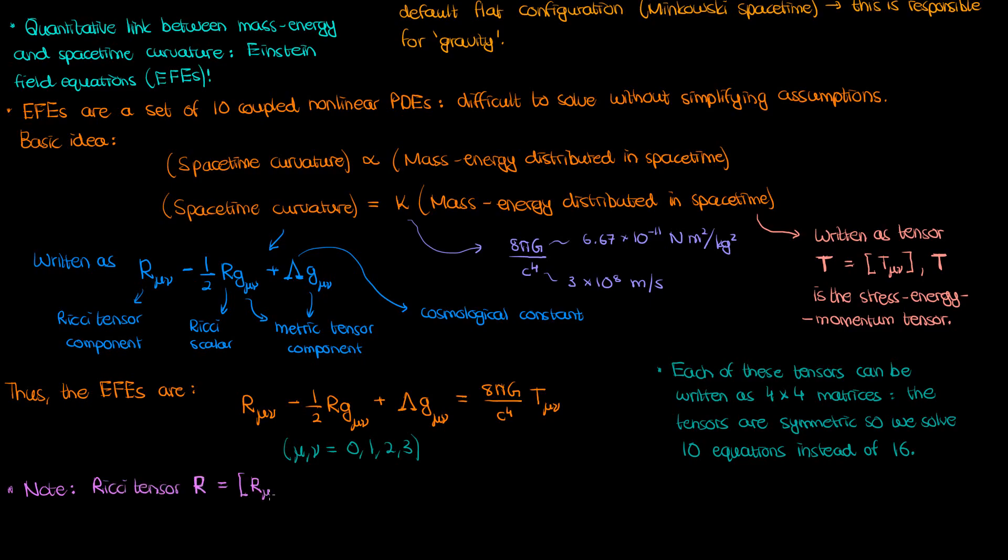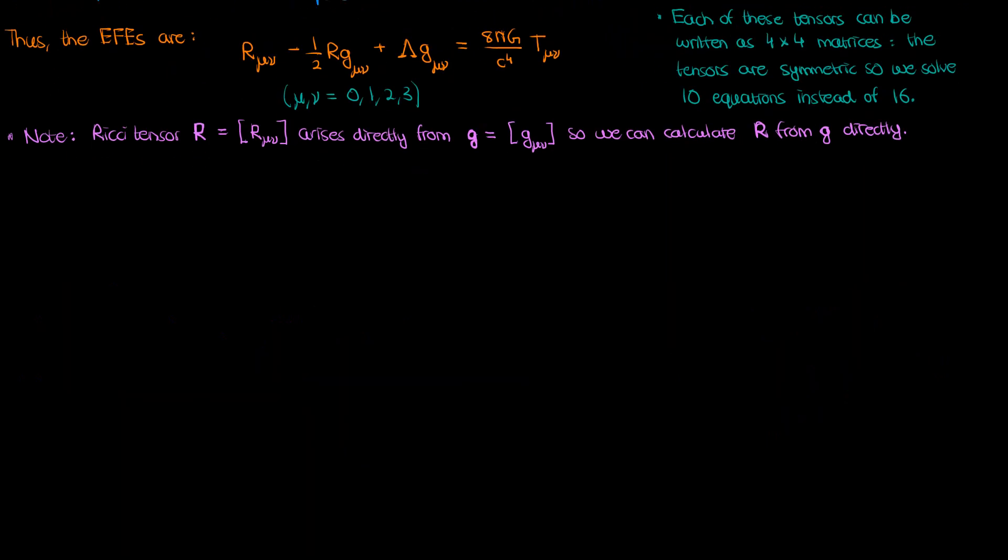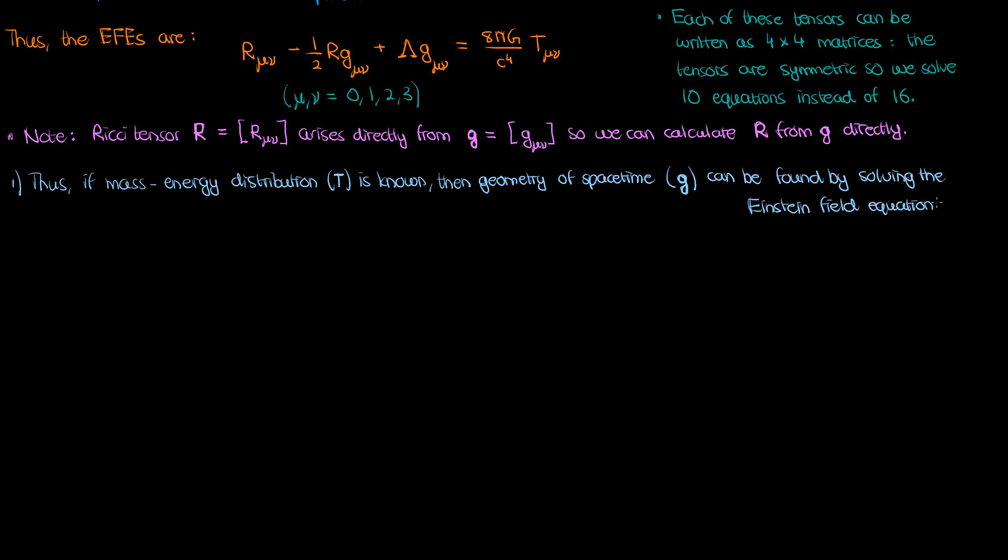In addition, the Ricci tensor on the left directly arises from the metric tensor, so if you know what your metric tensor is for your spacetime configuration, you can automatically find the Ricci tensor after a series of complicated calculations. Of course, the reason we don't just write everything on the left in terms of just the metric tensor is that it would make our equation really long, and we prefer to make things look more concise instead. This means that in the end, if we know the mass-energy distribution across spacetime, so if we know the stress-energy tensor T, that means that we can find the geometry of our spacetime in terms of the metric tensor G by solving the Einstein field equations.